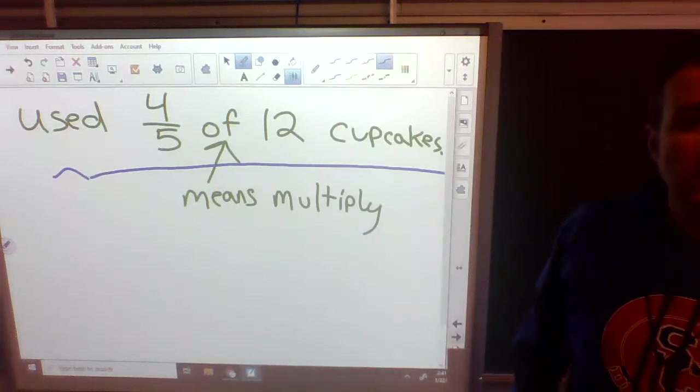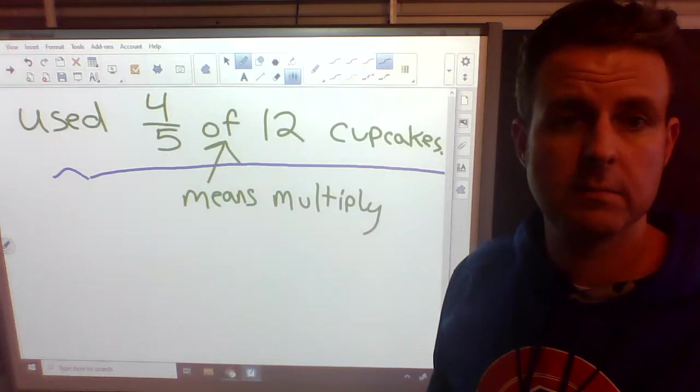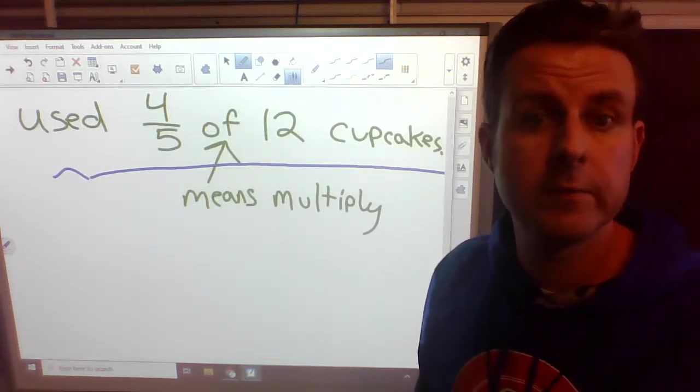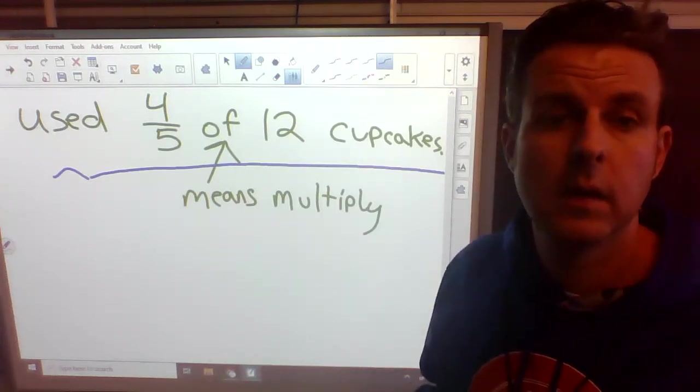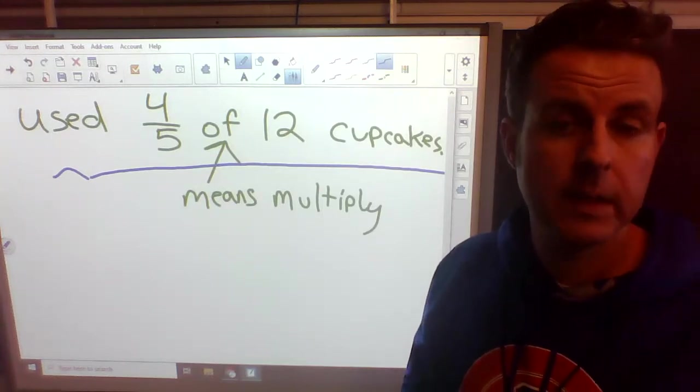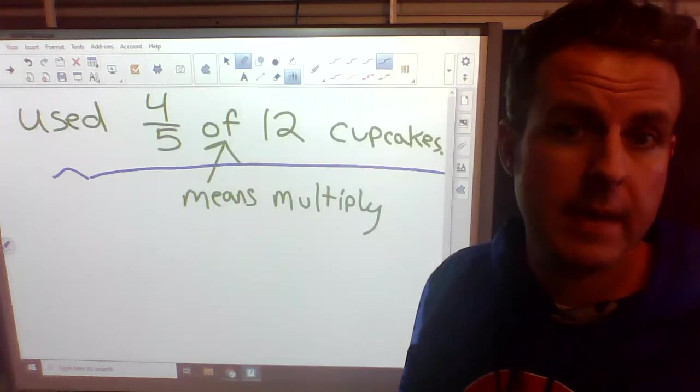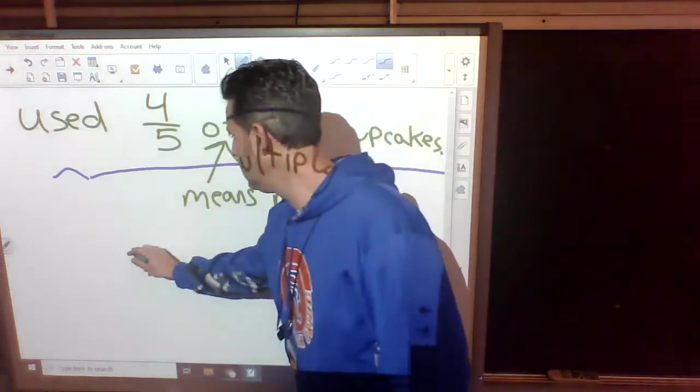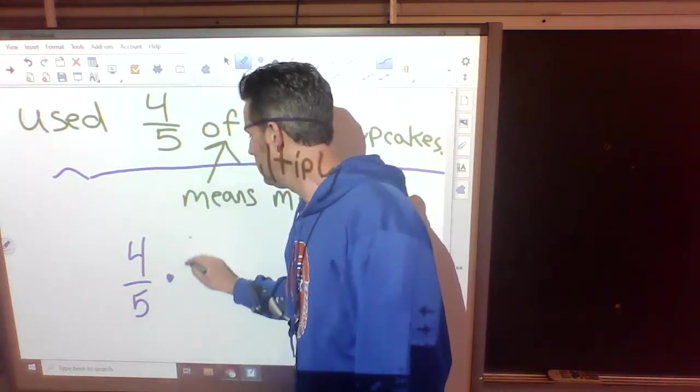Alright. So, it doesn't tell us to multiply here. It doesn't say multiply 4 fifths times 12. It doesn't say that. It says that you used 4 fifths of 12. How many did you use? Well, that word of, when you see it in any word problem, 99 times out of 100, that word of means to multiply.